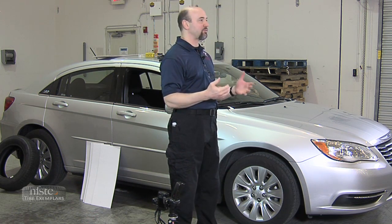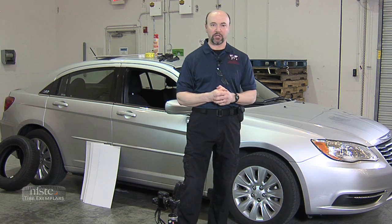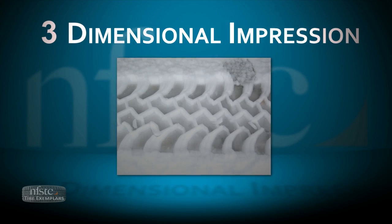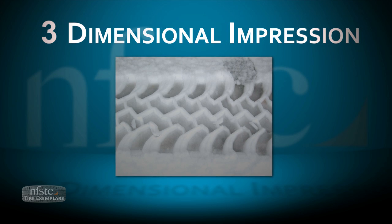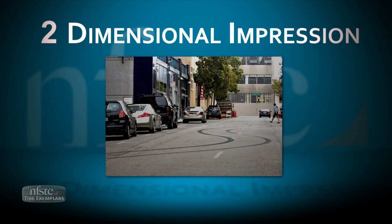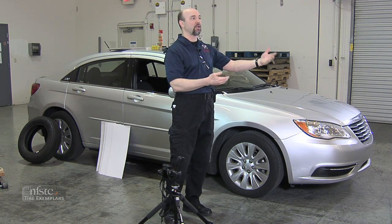The first thing we'd have to have is some type of a tire impression at our crime scene. That could be a tire impression in clay, snow, or mud, where we'd have a three-dimensional impression, or even a two-dimensional impression where somebody drives over an area and we can see a tire track — it left a replication of that tire tread at our scene.